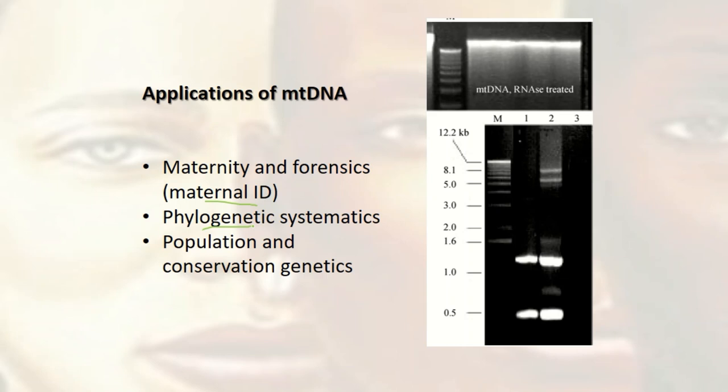We also have population and conservation genetics, because mitochondrial DNA has very few mutations — within 8,000 years we'll just have one mutation. That way, we are able to understand organisms and map the genetics of organisms and populations.